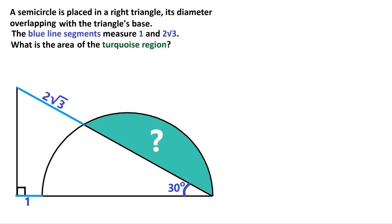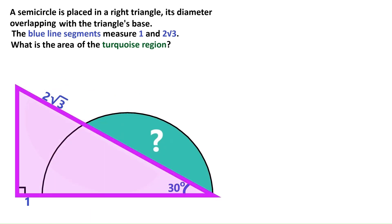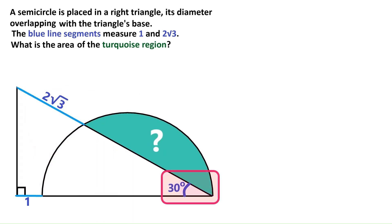I've got another fascinating geometry problem for you. In this one we've got this semicircle and it's sitting on the base of this right triangle and we know this angle is 30 degrees and we also know that this segment down here is 1 and this segment up here is 2 times radical 3 and we're asked to find the area of this turquoise region.